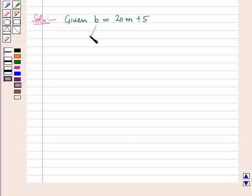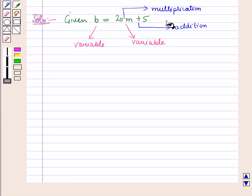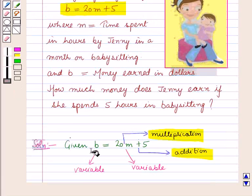Now here we have two variables, that is the variable B and variable M. Also here we have two operations, that is the operation of addition and the operation of multiplication. Also we know that M is time spent in hours by Janie and B is money earned in dollars.